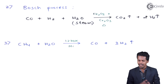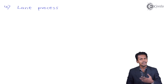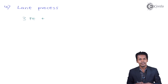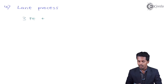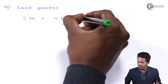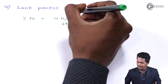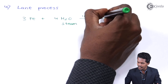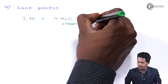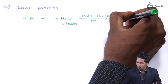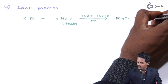There is one more process — Lane's process. In this process, iron is treated in the presence of superheated steam at a high temperature of 1023 K to 1073 K. Iron itself acts as the catalyst. The products obtained are Fe₃O₄ along with H₂ gas. This is another process by which hydrogen gas can be produced commercially.